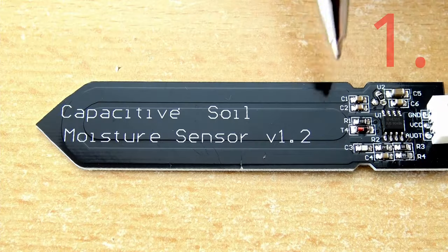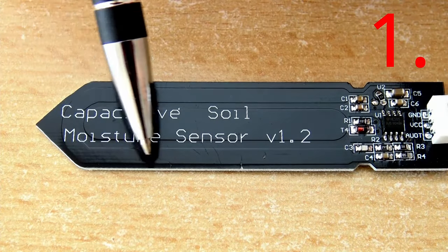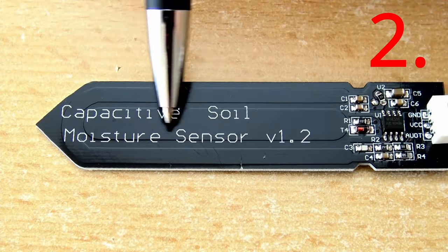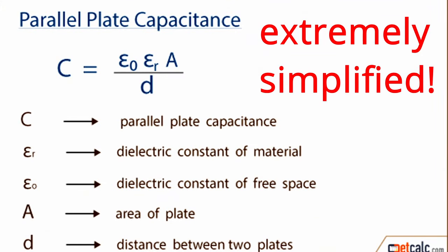Capacitive soil moisture sensors do not have any copper exposed to water and they won't dissolve. Here's a brief explanation of their working principle. Two isolated copper paths on the sensor PCB form a capacitor. Its capacity is determined, among other things, by the amount of water in the surrounding area of the sensor.